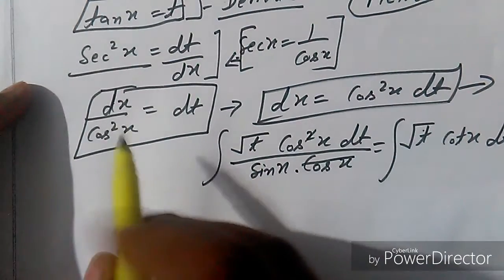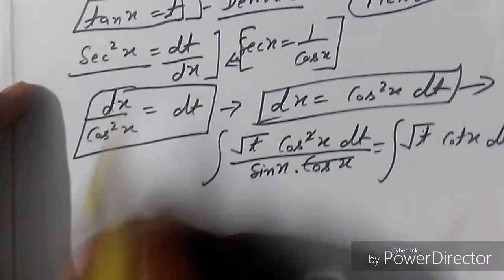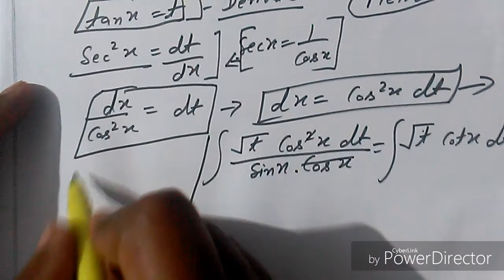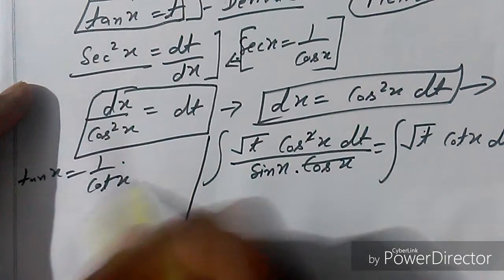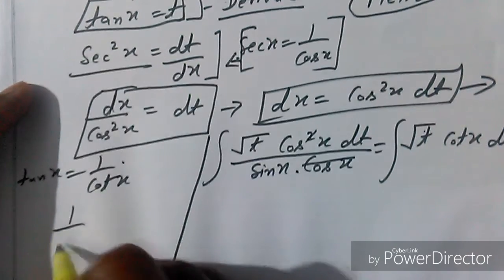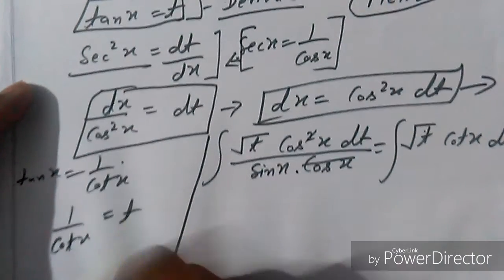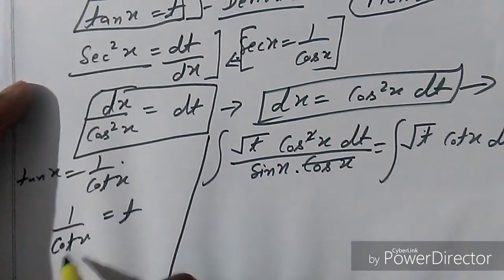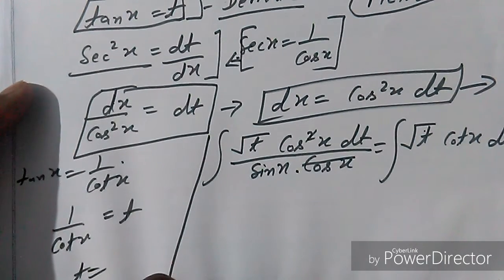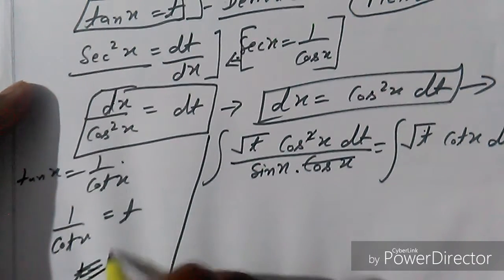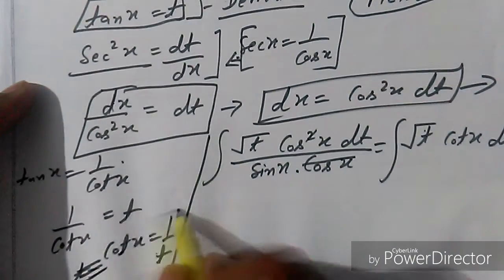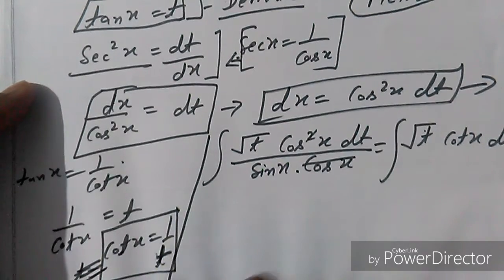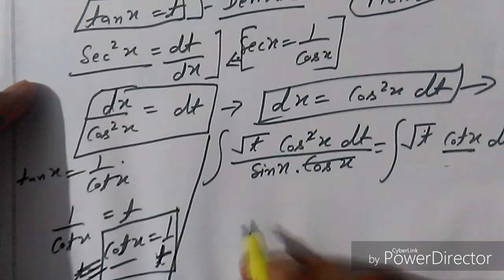Since tan(x) equals t, and from trigonometry tan(x) equals 1/cot(x), we have 1/cot(x) = t, which means cot(x) equals 1/t. We substitute cot(x) with 1/t in the integral.